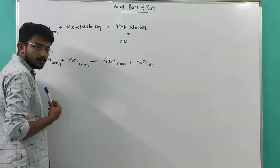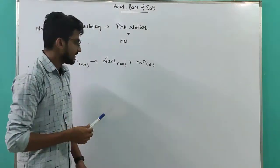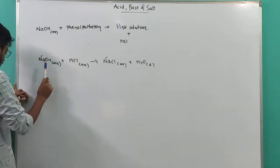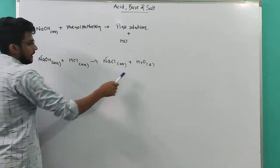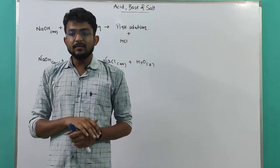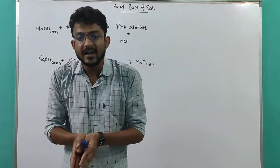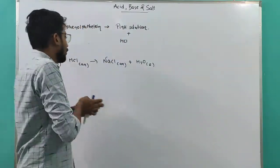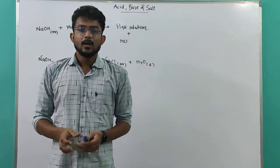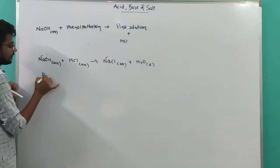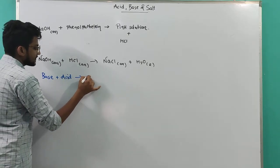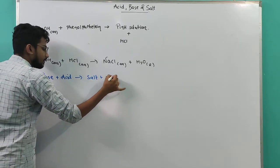NaOH + HCl → NaCl + H2O. Balancing: one sodium, one sodium; two hydrogen, two hydrogen; one oxygen, one oxygen; one chlorine, one chlorine — balanced. The reaction between acid and base to give salt and water is called a neutralization reaction. The common reaction is: acid + base → salt + water.